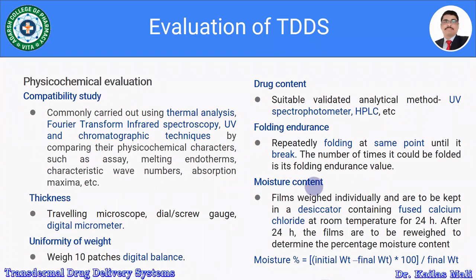Moisture content is an important physicochemical parameter because it determines the stability of the API in the transdermal patch. To measure moisture content, the weight of each patch is taken individually and the patch is placed in a desiccator containing fused calcium chloride at room temperature for 24 hours.